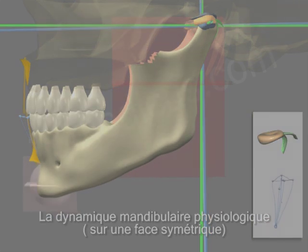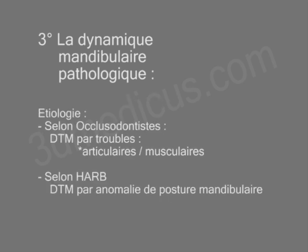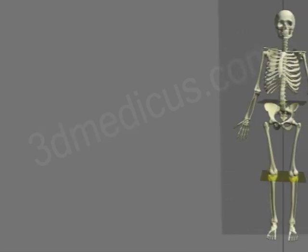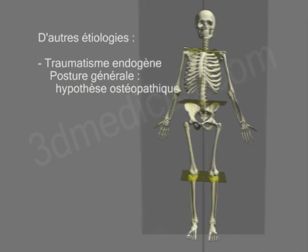Thirdly, pathological mandibular dynamics of a symmetrical phase and of an asymmetrical phase. For occlusodontists, in short, the problem is either in the hinge through disc subluxation caused by a trauma or a pathological general posture, or in the muscles — either stress-related or hyper-function. According to Doctors Harb and Debus, the problem can be found in mandibular posture abnormalities due to several etiologies — for example, the influence of pathological general posture.